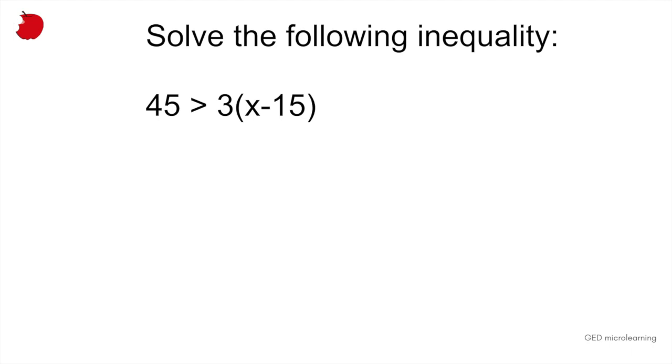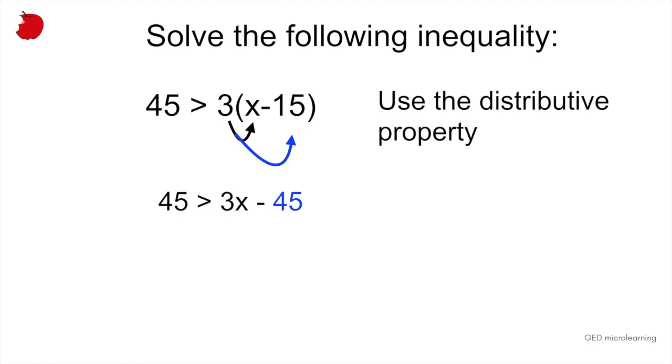And in order to solve the right side of the equation, we're going to use the distributive property. This means that you're going to take everything outside that bracket, mainly number 3, and you're going to multiply 3 by each of the values inside the bracket. So we're going to say 3 multiplied by x and 3 multiplied by 15.